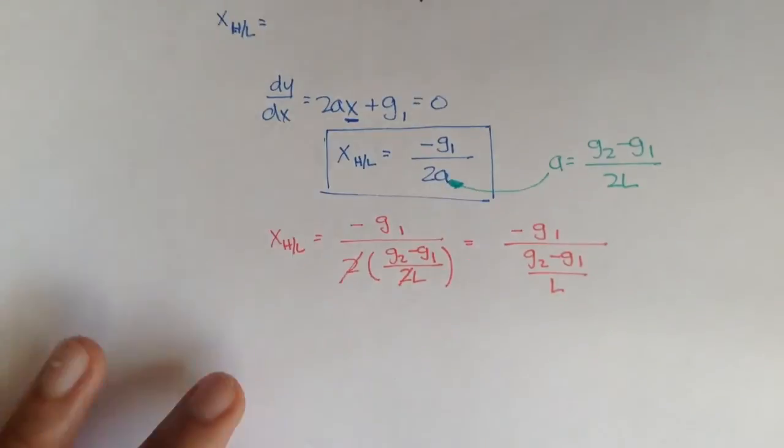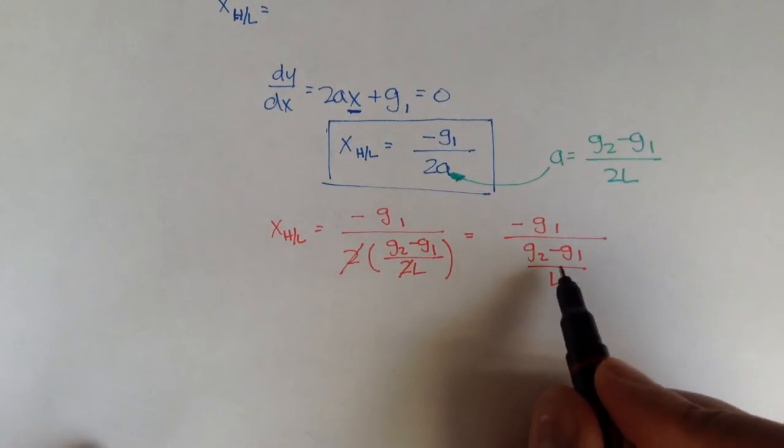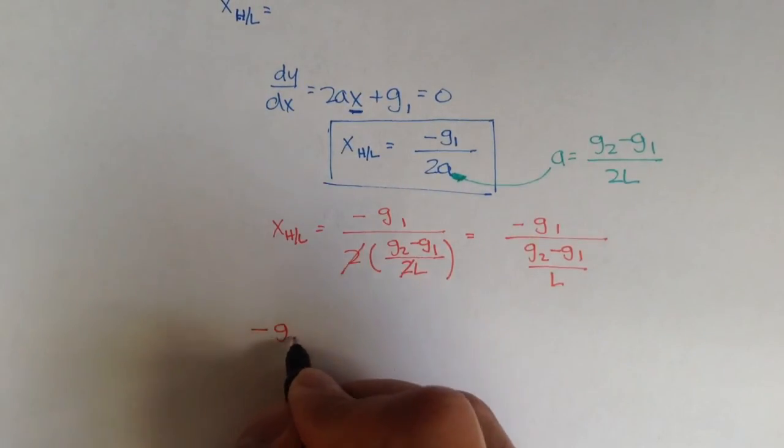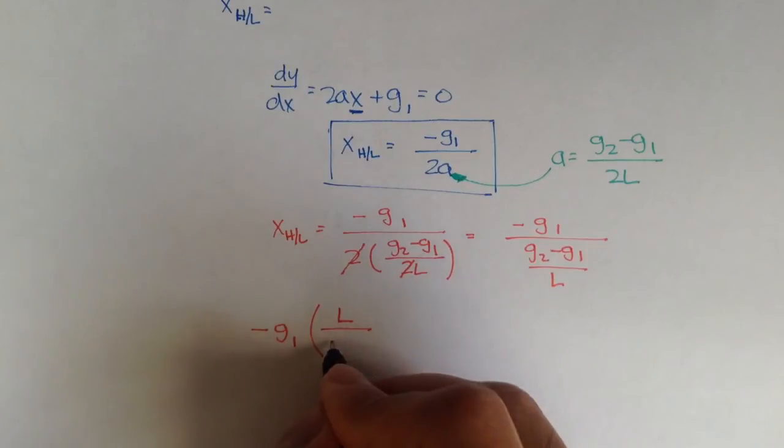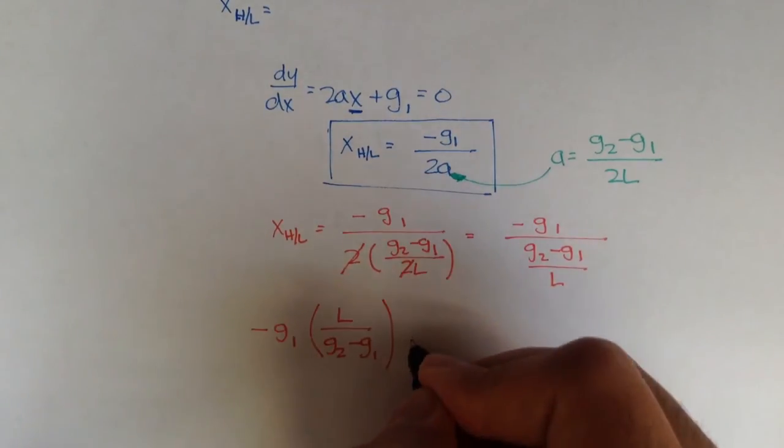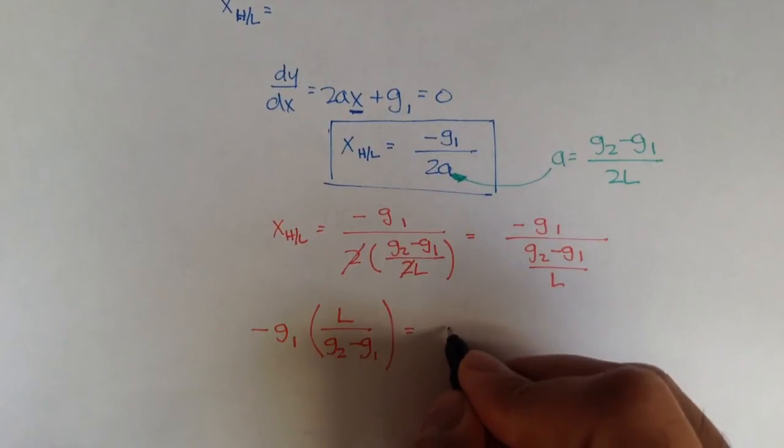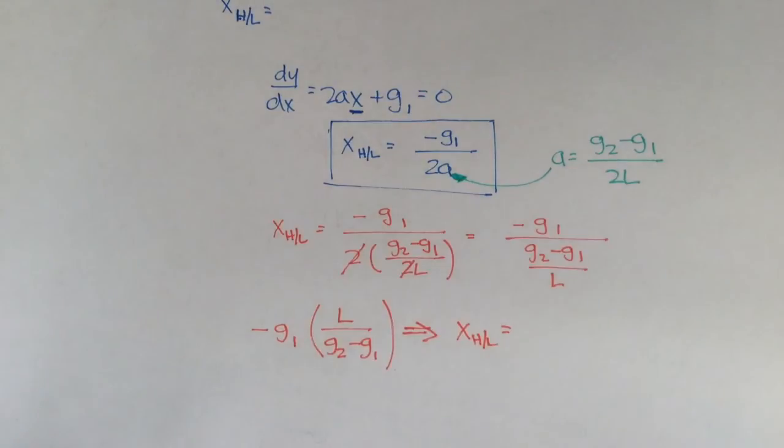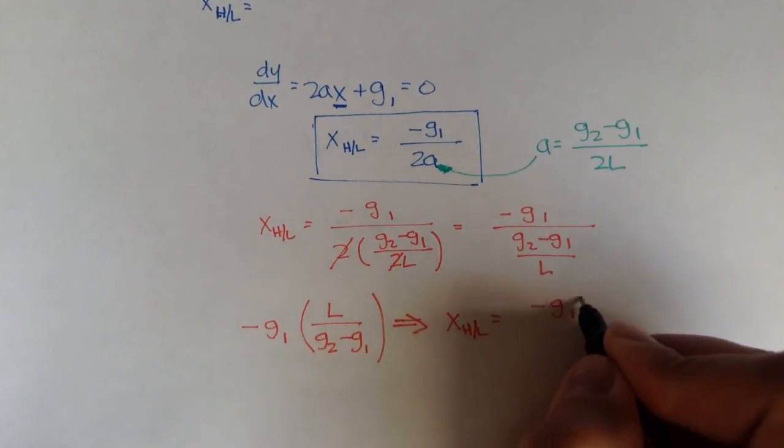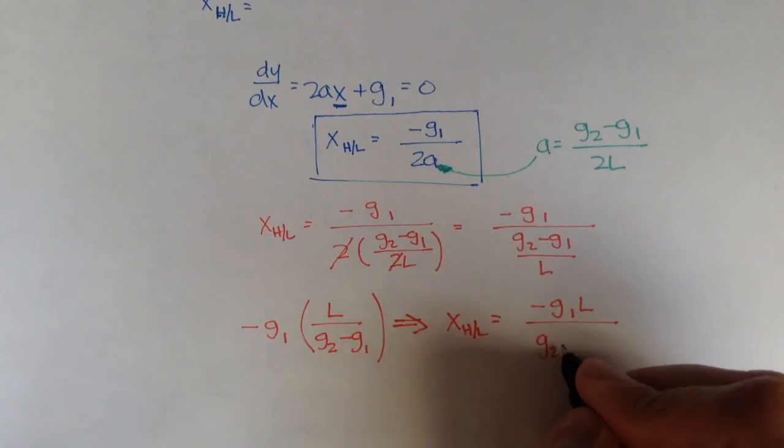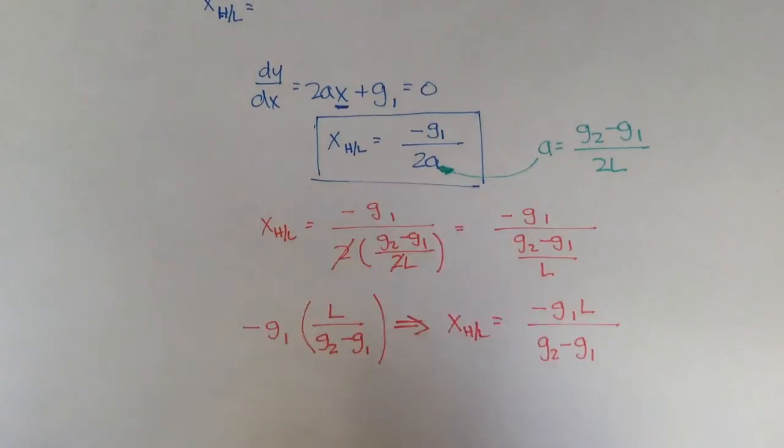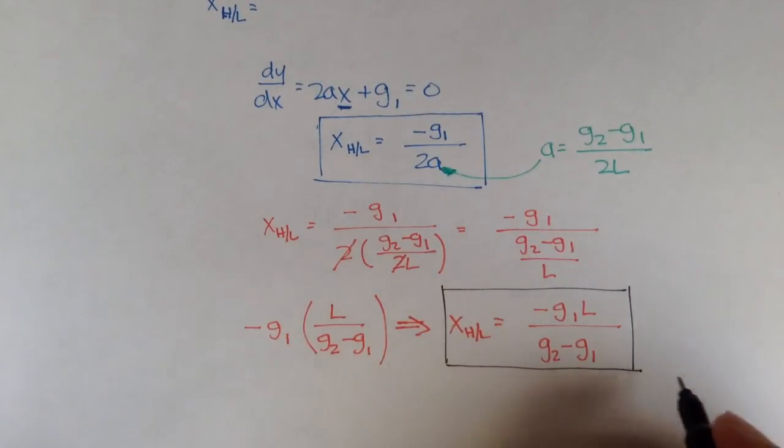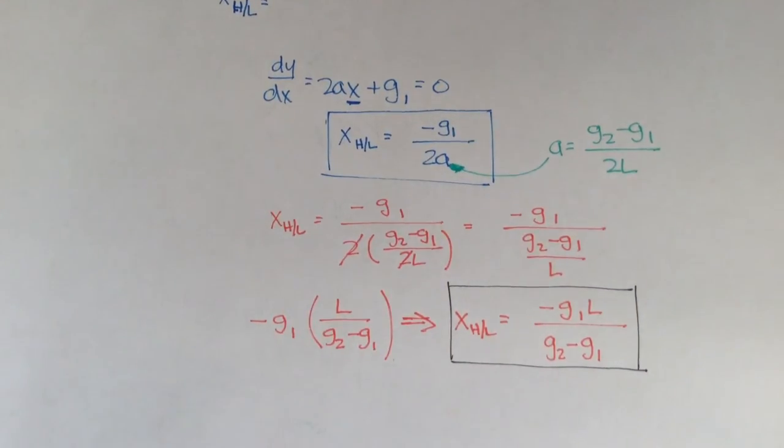So here we can apply a little algebra magic, and we can take the reciprocal of this and multiply it with negative g1, and that would give us negative g1 L over g2 minus g1. And if we simplify this, then x high low gives us negative g1 times the length over g2 minus g1. And that's just another form of this equation we can use to find the location of the highest or lowest point.